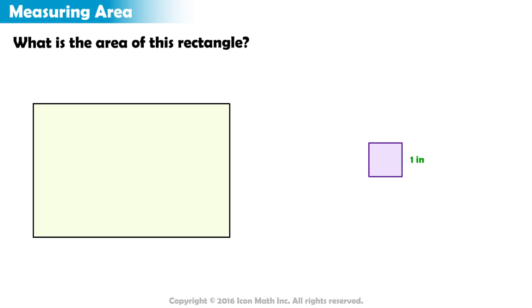We make as many copies of this unit square as necessary to cover the whole rectangle. We can start from here and line up as many unit squares as needed until we hit the other end. We needed exactly 6 square inches to go from side to side.